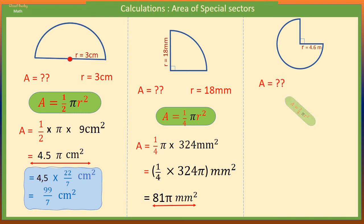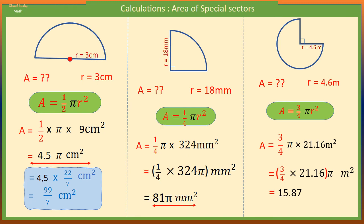The area of this three-quarter circle is given by A = 3/4 πr². The radius is 4.6 meters. That means the area is 3/4 times π times radius squared. Squaring 4.6 gives 21.16 square meters. 3/4 of these will give 15.87π square meters.